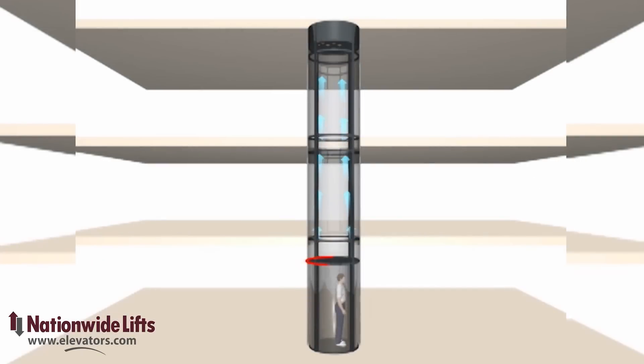The pneumatic vacuum elevators have an airtight seal built into the top of the cab. Air is removed from the upper section of the hoistway, creating vacuum pressure that draws the cab upward. The controls will allow the cab to stop at a mid-landing or continue to the top.